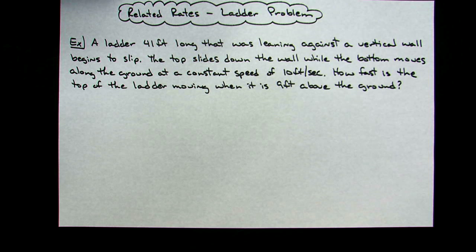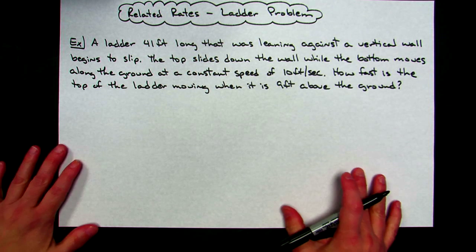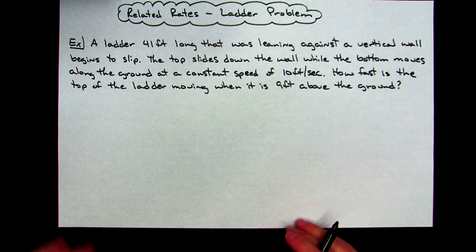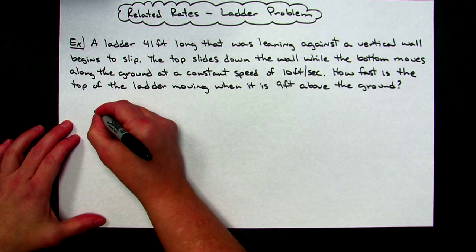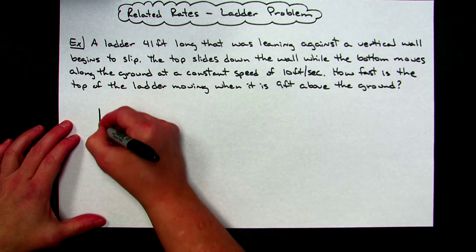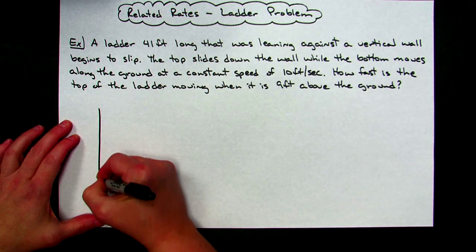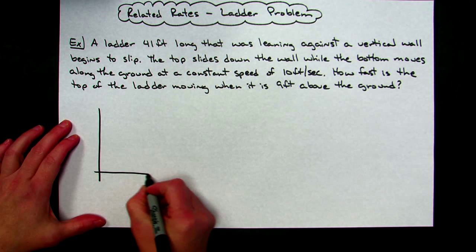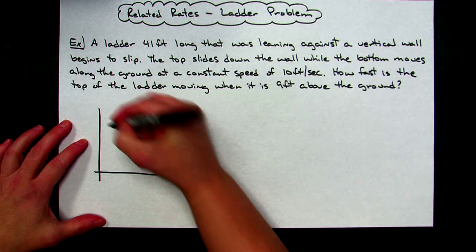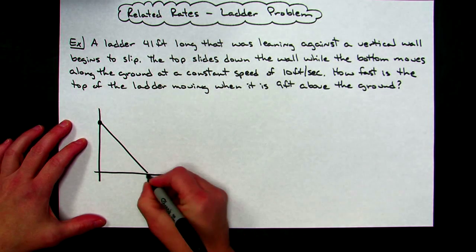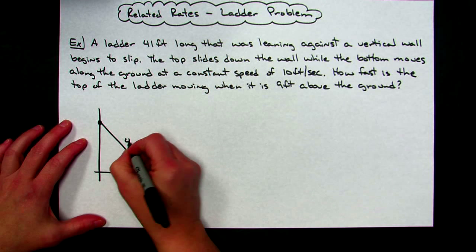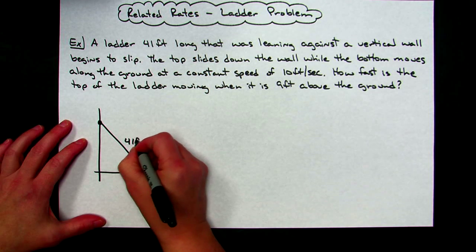To start any related rates problem, I always like to draw a picture first so that we can define some variables and know what we're looking at. So let's draw here — typically we've got a wall and along the ground, and our 41-foot ladder would be right here. We can go ahead and label that 41 feet.